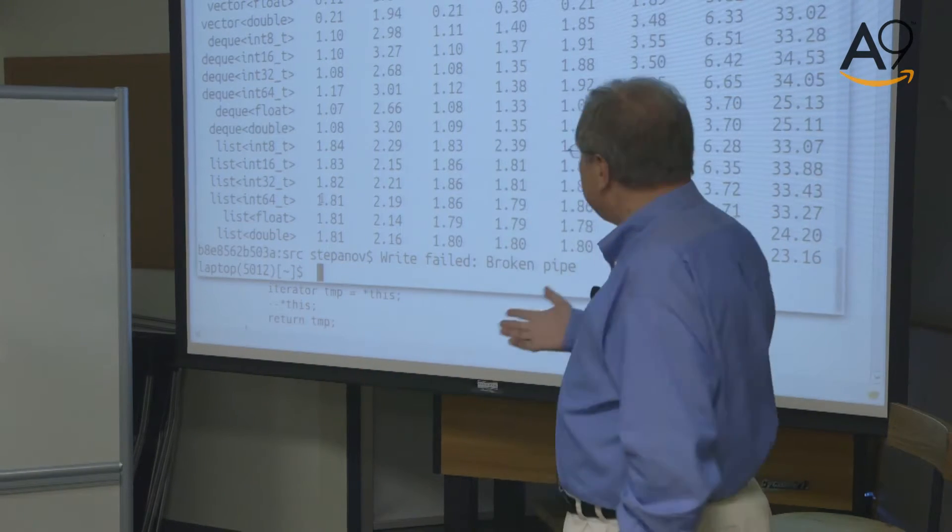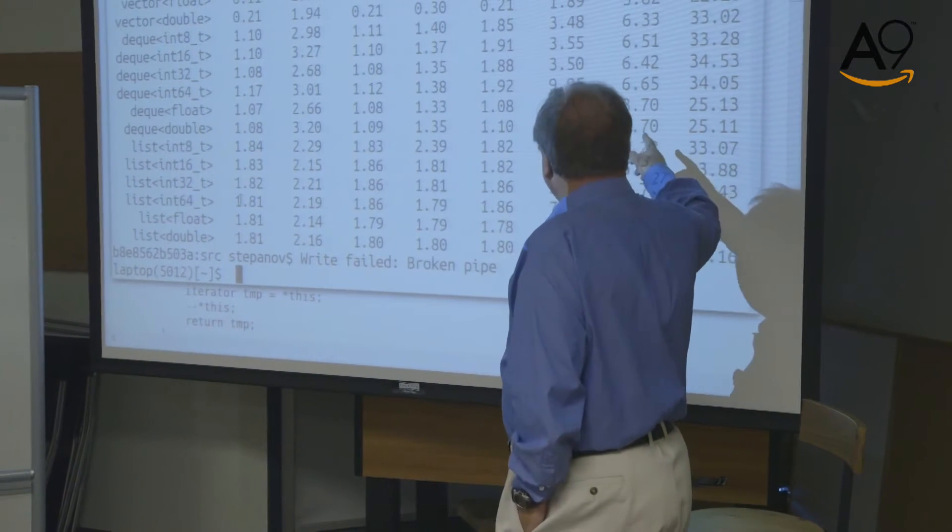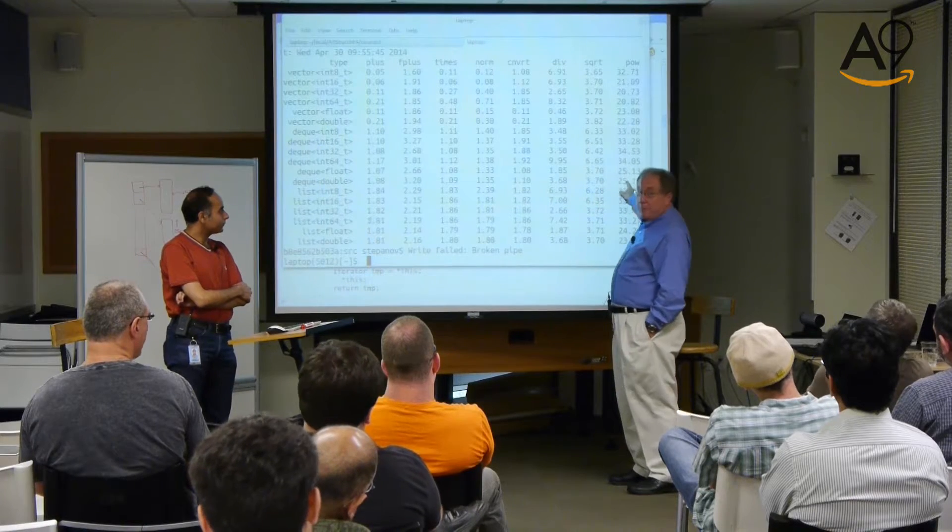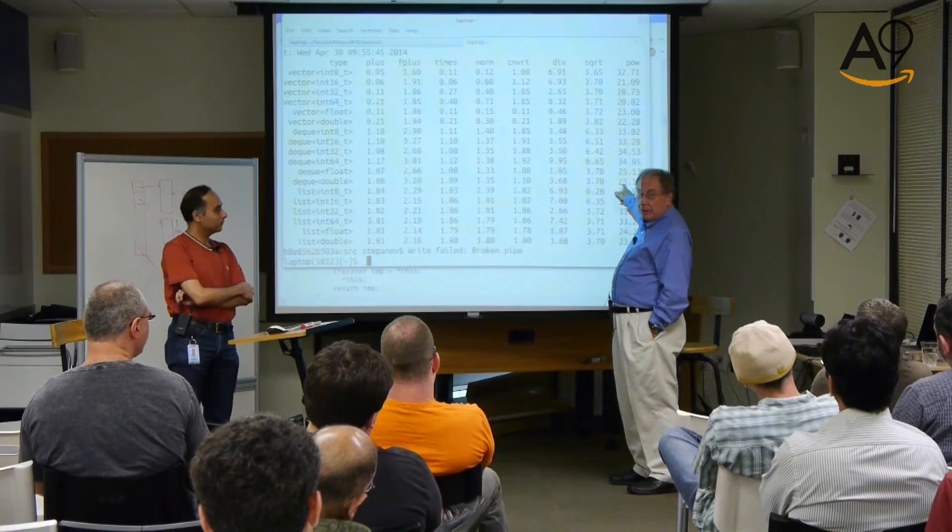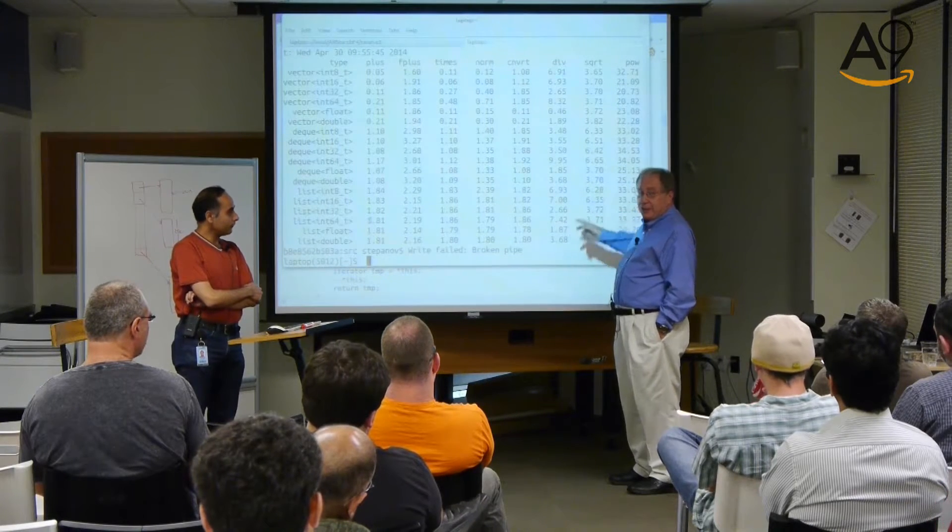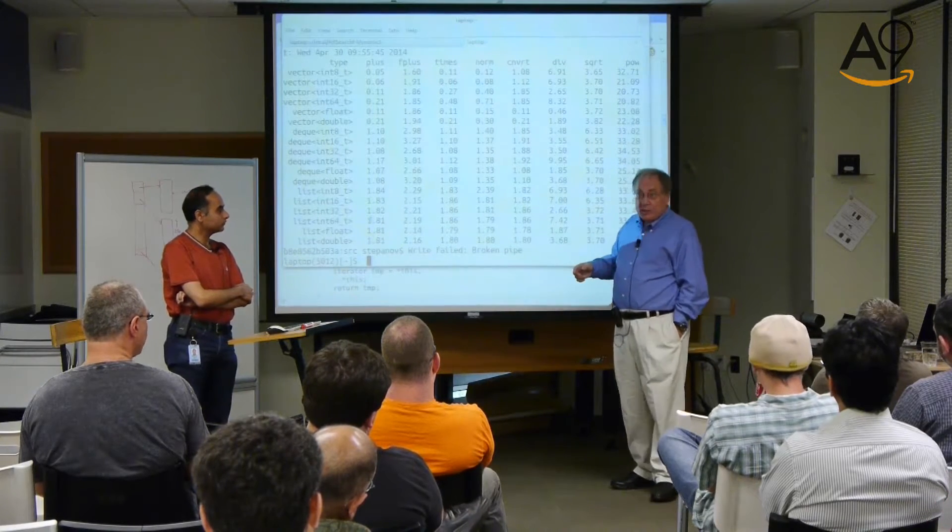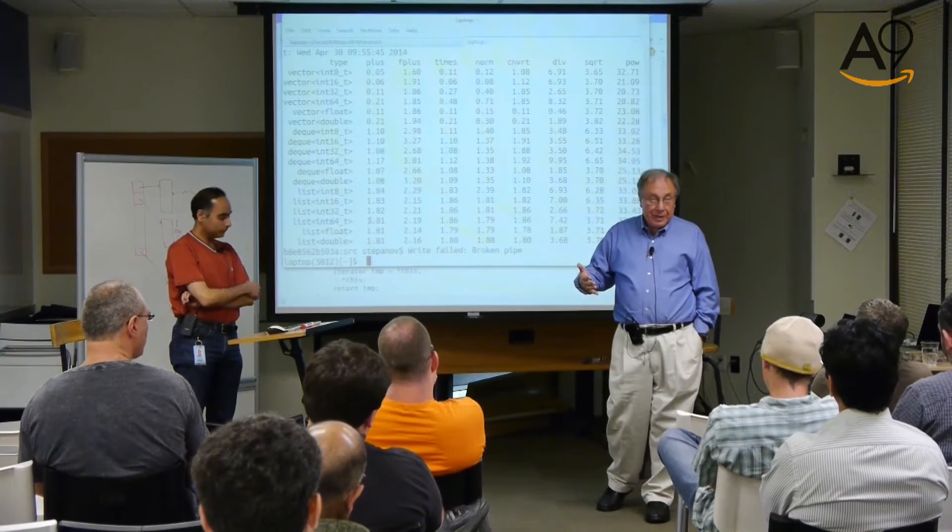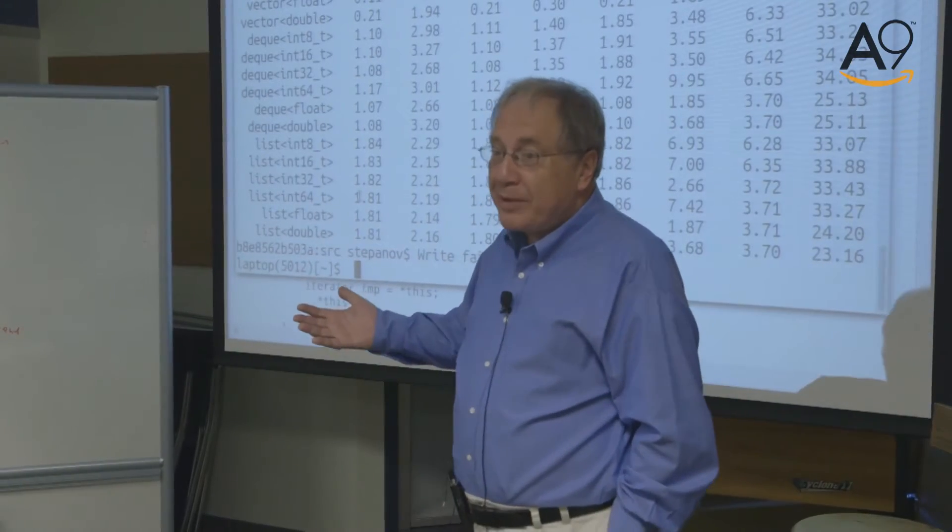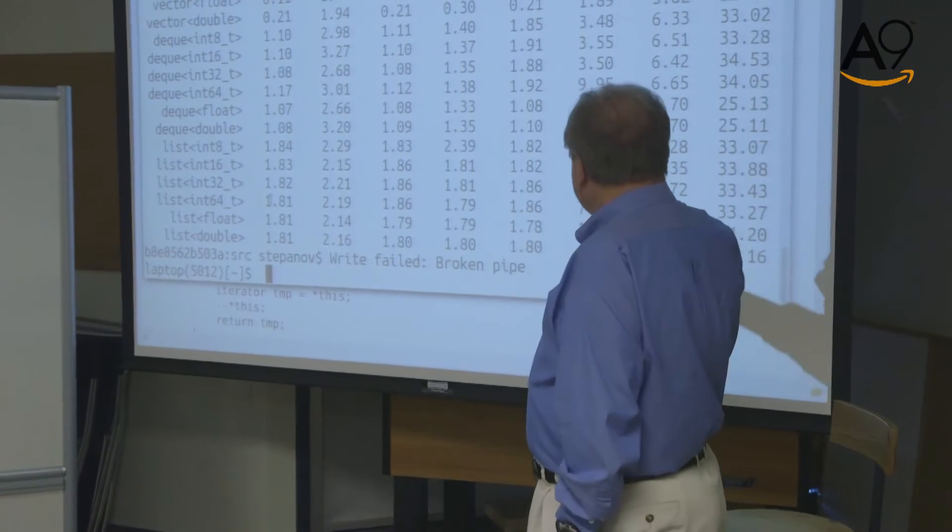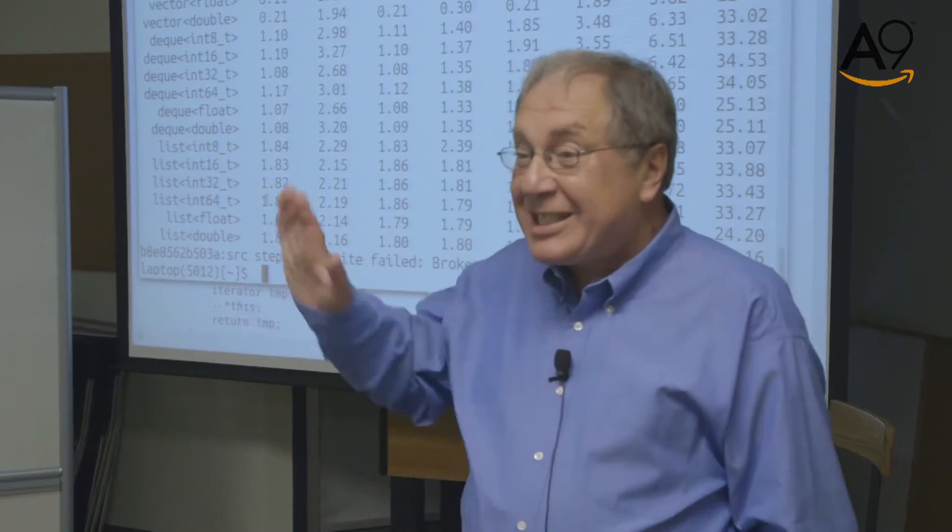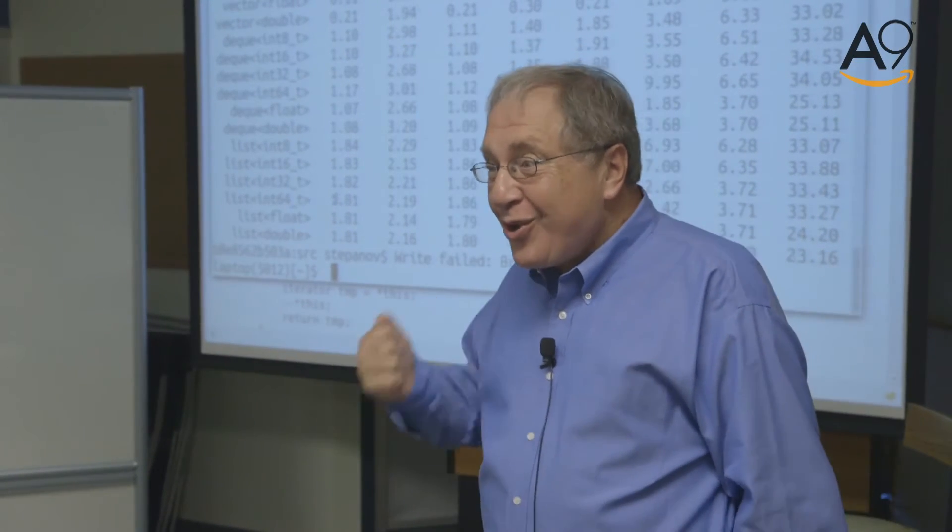All the rules have to have this qualifier: when used inappropriately. Division is very harmful if you could replace it by shift. But if you need to divide by seven, it's not harmful, you need to divide by seven.